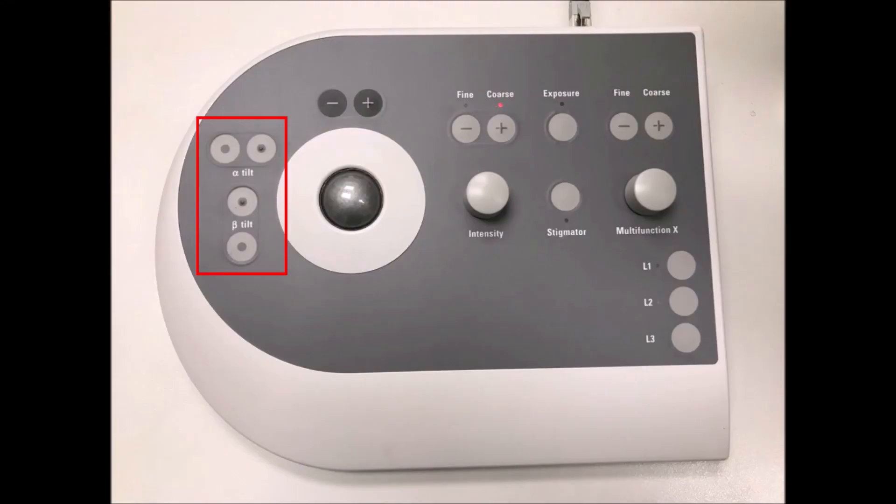And we can see in this diffraction pattern that I have a very evident open Lowey circle. So now I want to use my alpha beta tilt controls on my left-hand panel to close the Lowey circle and to get to that criterion where every Bragg spot and its opposite has the same intensity as viewed in the diffraction pattern.